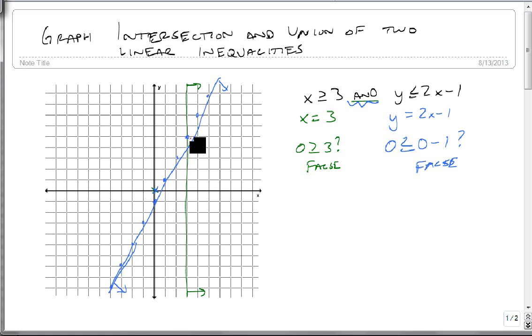Only one inequality, x is greater than or equal to 3, wants to shade here. And only the other one, y is less than or equal to 2x minus 1, wants to shade here. The only region they both want to shade is this region right here. So that becomes our correct shaded region, the purple.